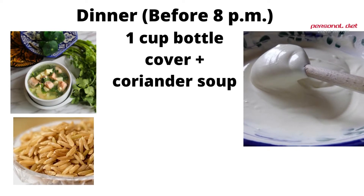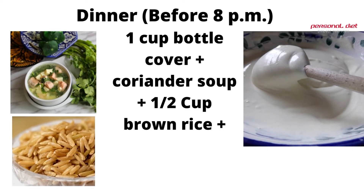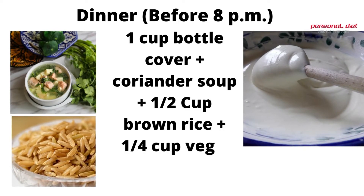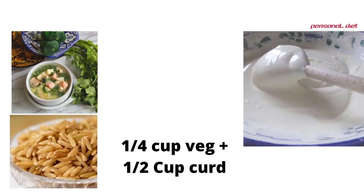Dinner, before 8 p.m.: 1 cup bottle gourd and coriander soup, 1 cup brown rice, 1 quarter cup vegetables, and 1 cup curd.